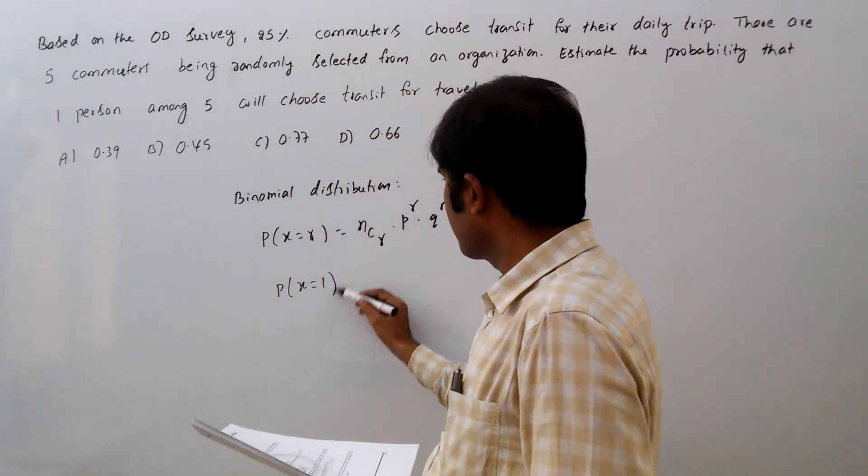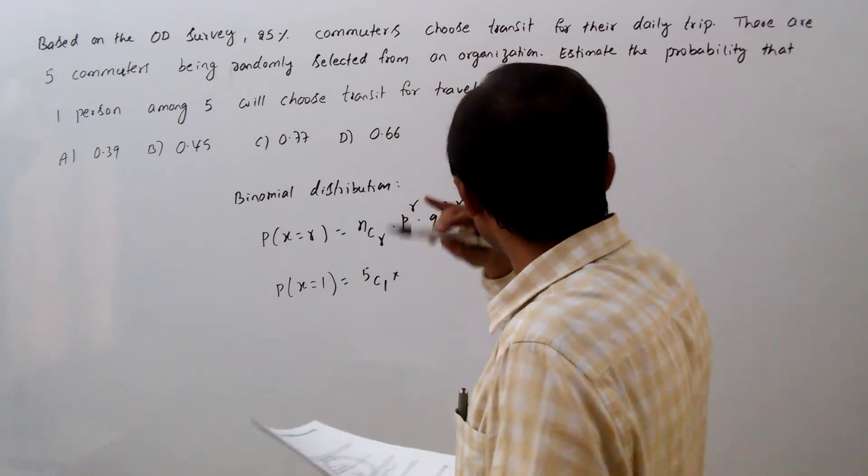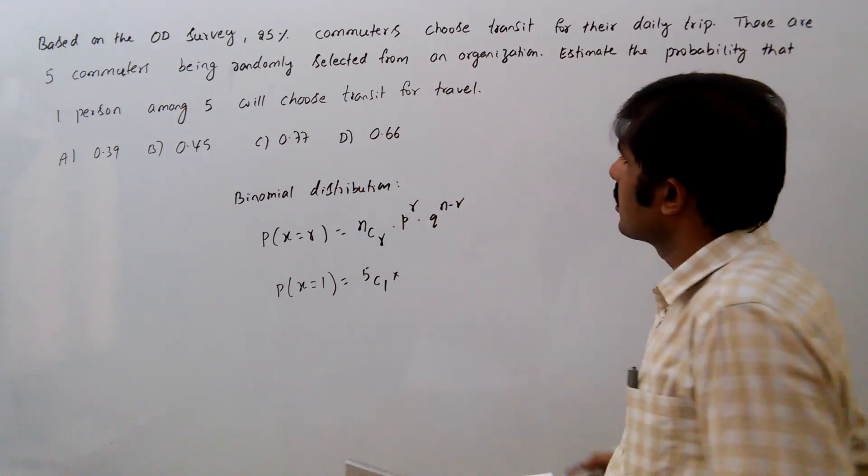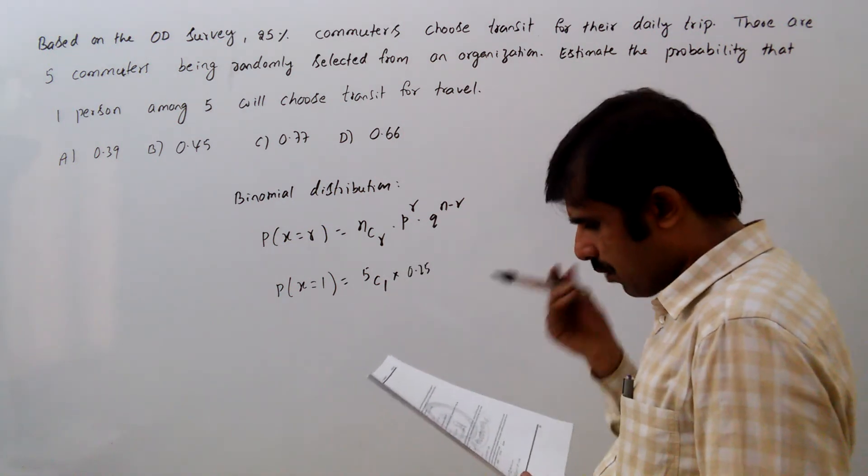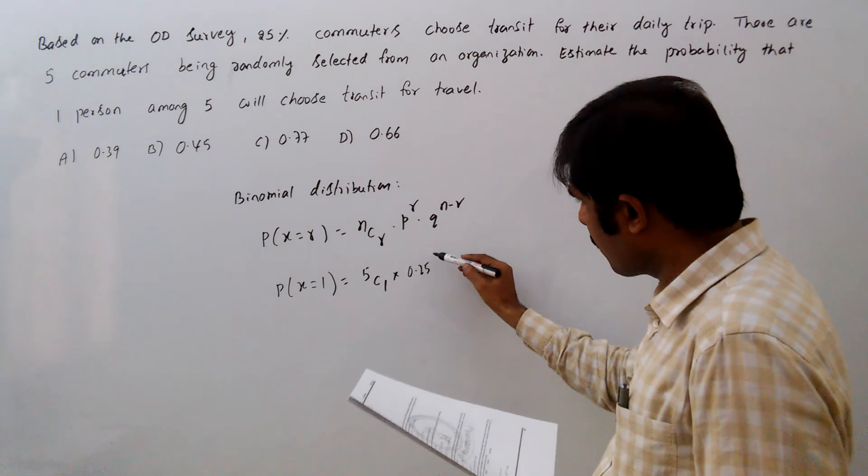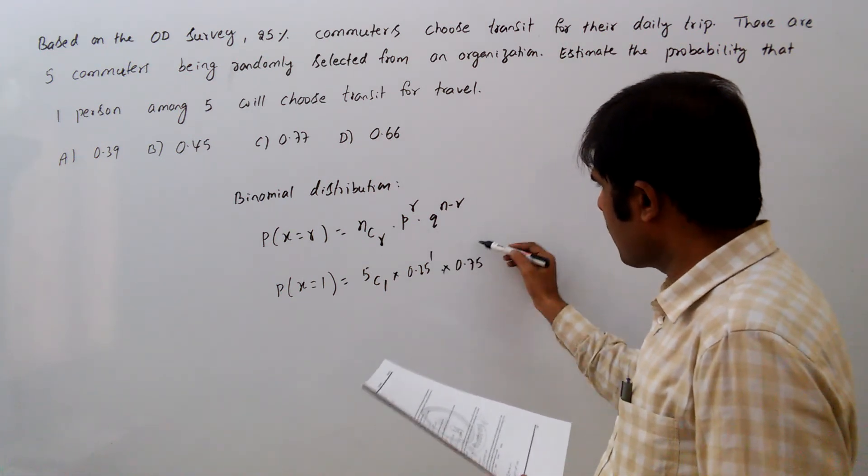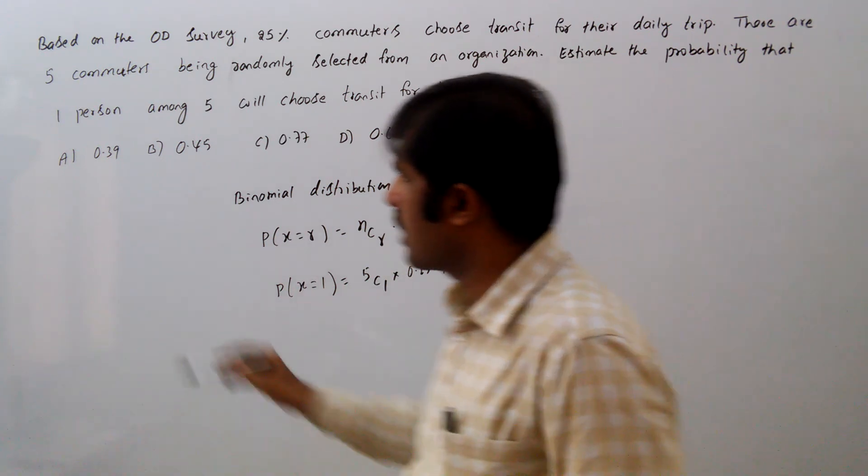P equals 0.25, so 0.25 to the power of 1, r equals 1. Q is obviously 0.75, n minus r means 4. This will be 0.39, so option A.